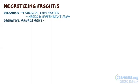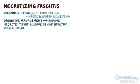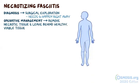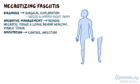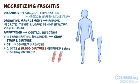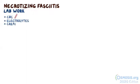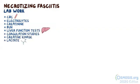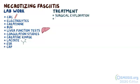The goal of operative management is to remove the necrotic tissue and leave behind only healthy, viable tissue. For severe necrotizing infection involving the extremities, amputation may be needed to control the infection. Intraoperative specimens should be sent for gram stain and culture. A CT can often help confirm the diagnosis, and two sets of blood cultures should be obtained before starting antibiotics. Lab work includes a CBC, electrolytes, creatinine, BUN, liver function tests, coagulation studies, creatine kinase, lactate, ESR, and CRP levels.